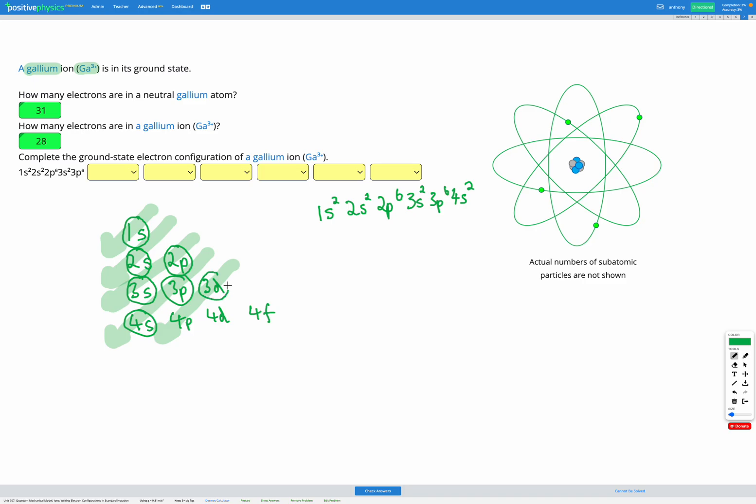After 4s we fill 3d. 3d can fill up to 10, so we've got 11 electrons left to fill, it's going to be 3d¹⁰. Finally we have one electron left which is going to go in our 4p subshell, 4p¹. There's our complete electron configuration for a neutral gallium atom.